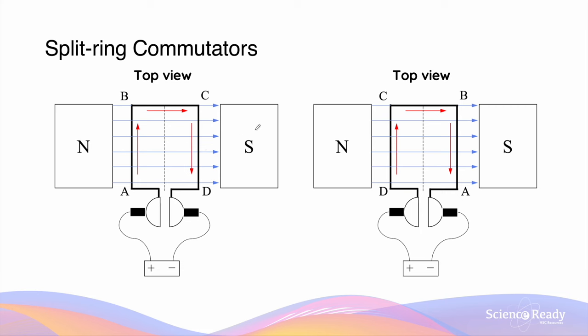In the second diagram, when the contact between the two commutators and the two brushes has been switched around, current is going from D to C and from B to A.